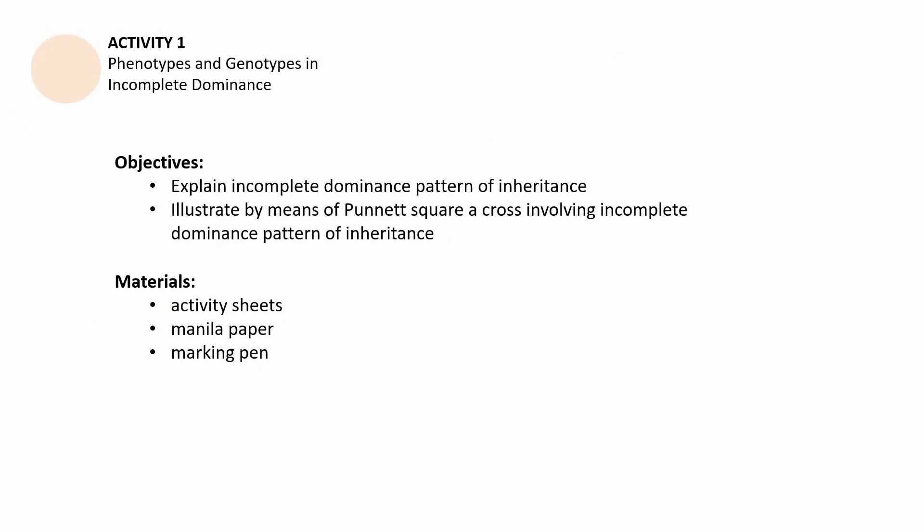Activity number 1 is entitled Phenotypes and Genotypes in Incomplete Dominance. It has the following objectives. First, explain Incomplete Dominance Pattern of Inheritance. Second, illustrate by means of Punnett Square a cross involving Incomplete Dominance Pattern of Inheritance. Realize that Incomplete Dominance is a non-Mendelian pattern of inheritance. You will be needing the following materials: an activity sheet which is found in your books, manila paper, and a marking pen.